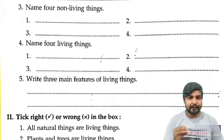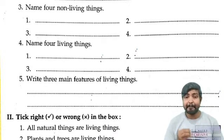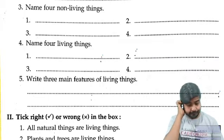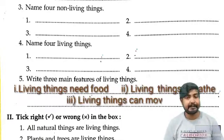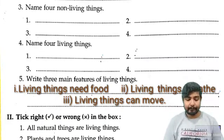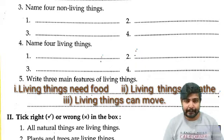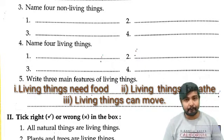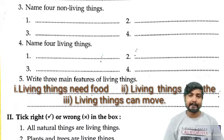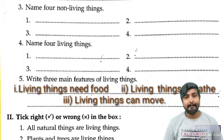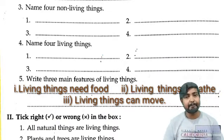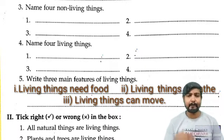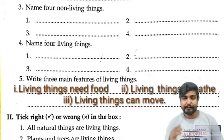Number 5: Write 3 main features of living things. Living things ke 3 main features: living things can eat, living things can move, and living things can grow.